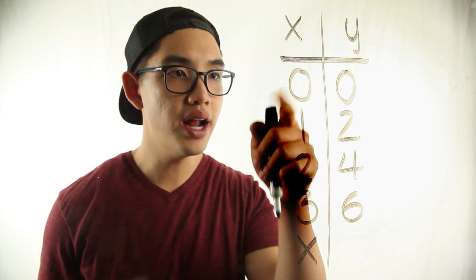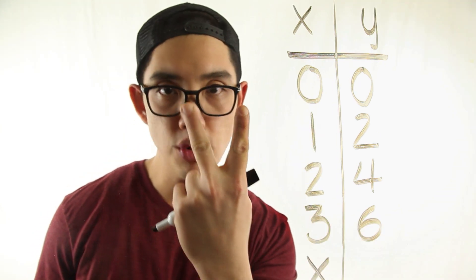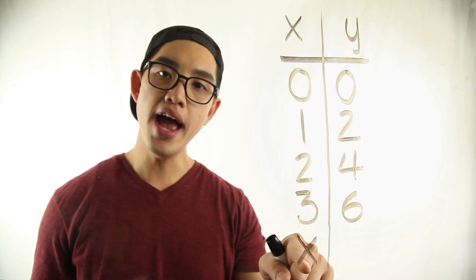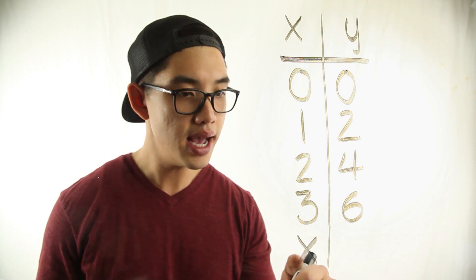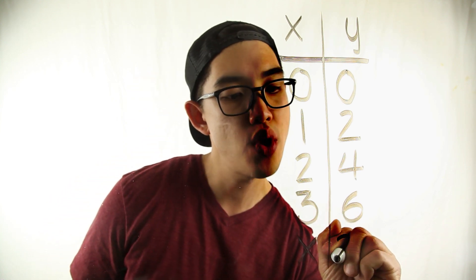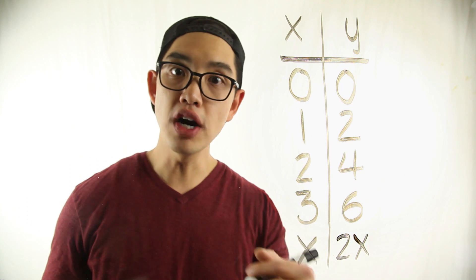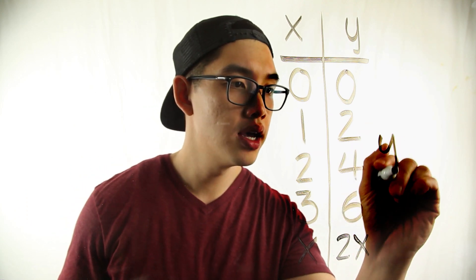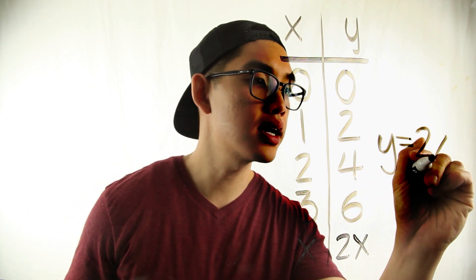I see that every time I put in an input I always double it. I always multiply it by two. For x I can say that when I put in x I will get two x. So my function rule is gonna be y equals two x.